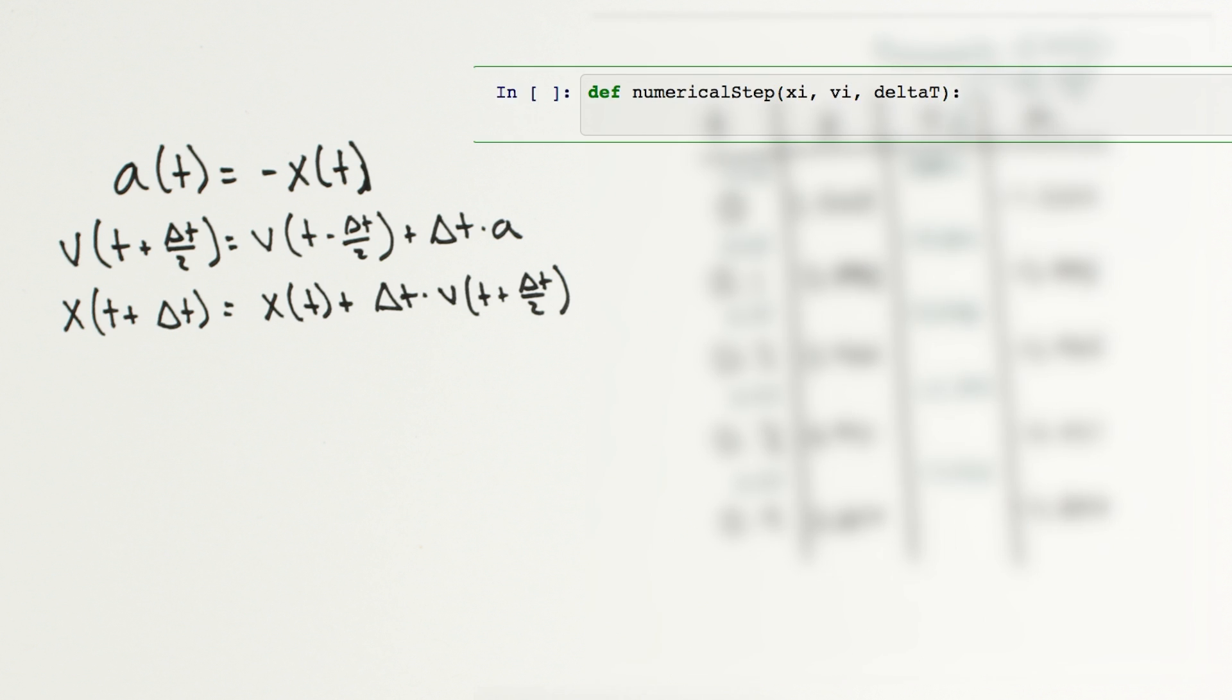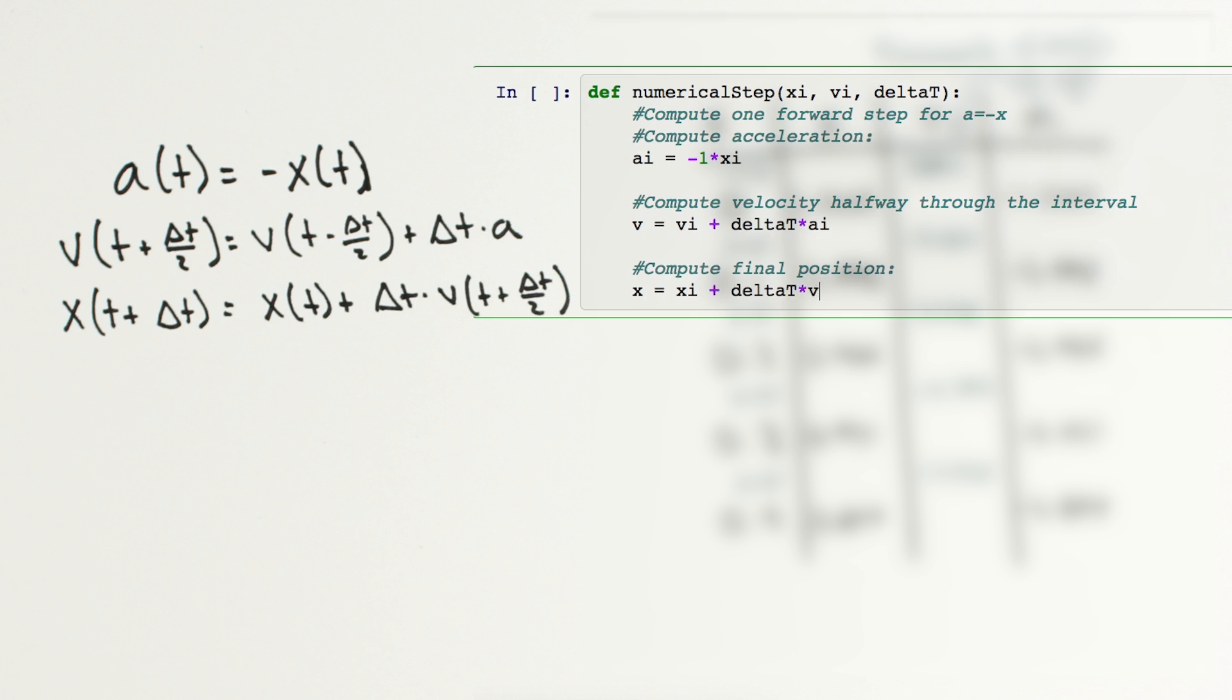We'll write a Python method that will take in the position at the beginning of the interval, and the velocity halfway through the previous interval. The method will then compute the acceleration and position at the end of the current interval, and the velocity halfway through the current interval.